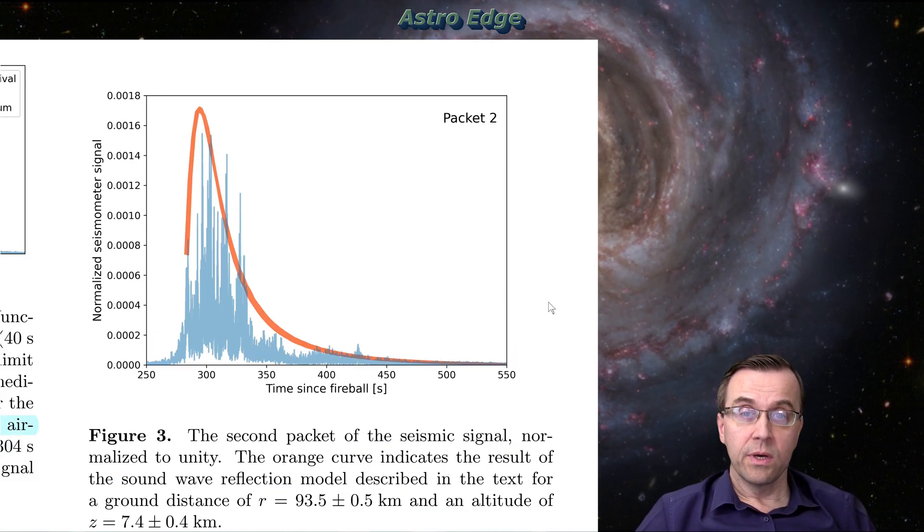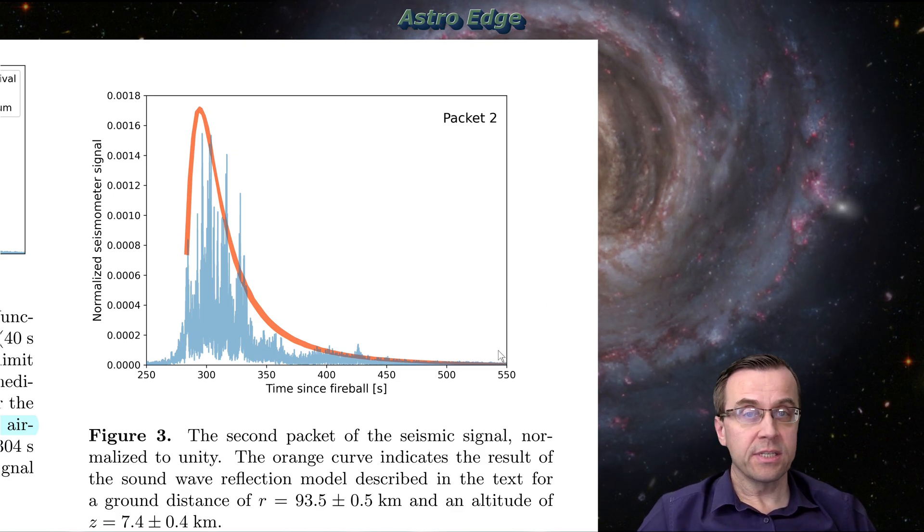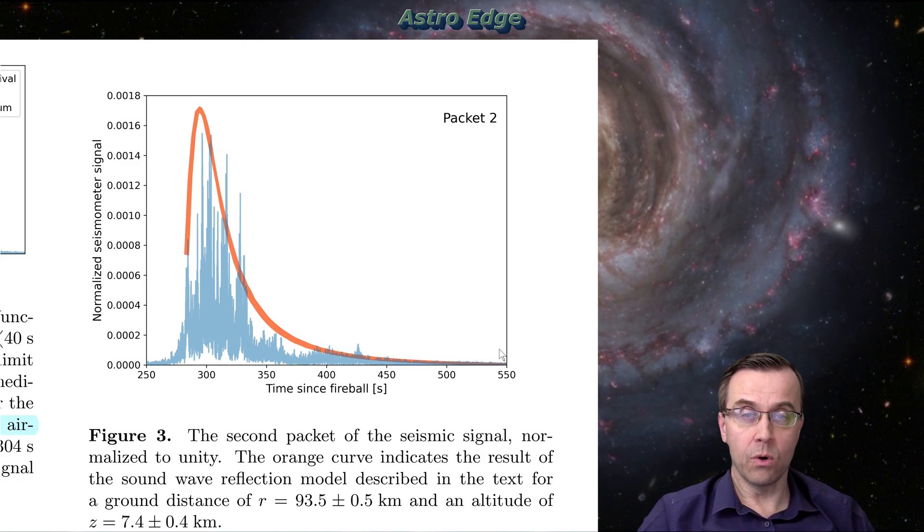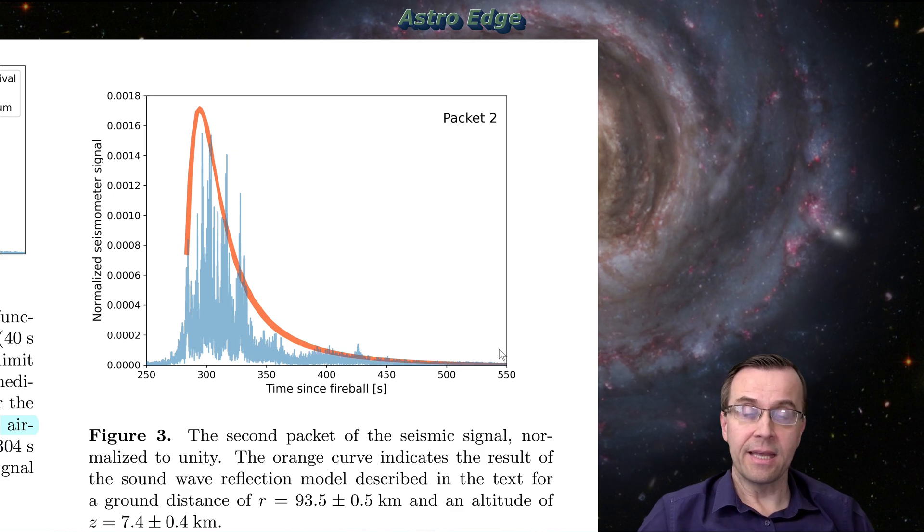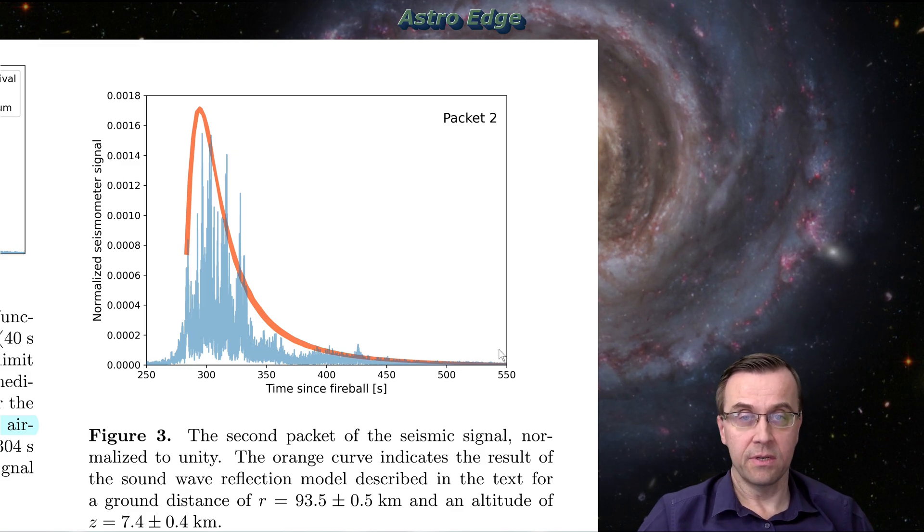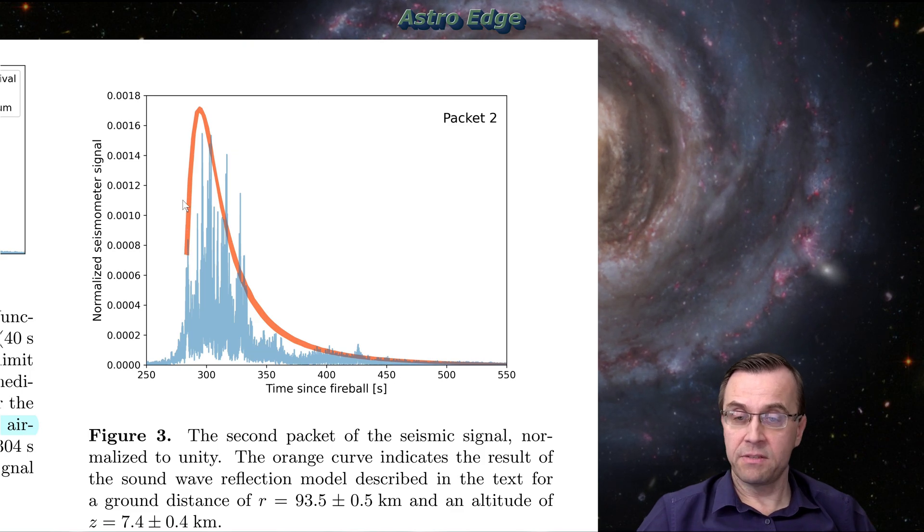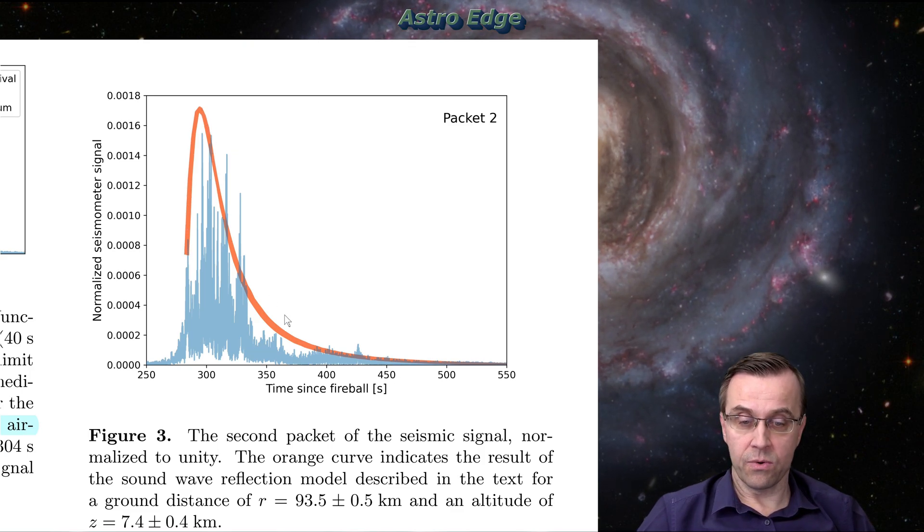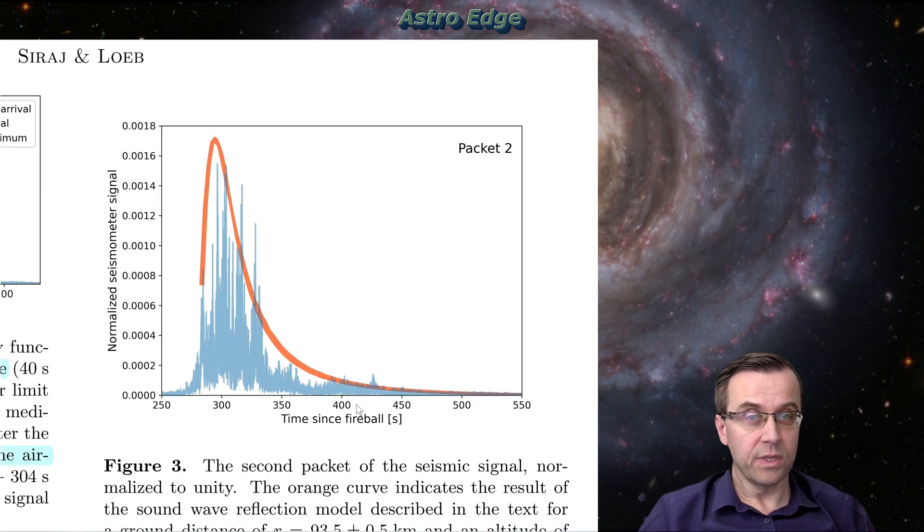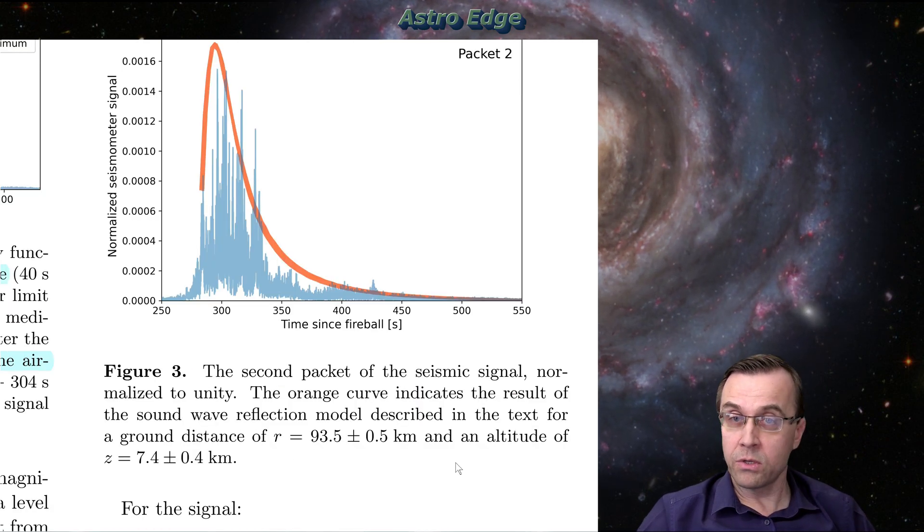So what did researchers do? They made a fairly sophisticated model, which describes how a sensor can hear a sound from an explosion over the ocean surface, including all those possible paths for the sound to come to the sensor directly or through a reflection from the water surface. The best fitting model is shown here in orange. As you can see, it follows the actual data pretty nicely. So this is a fairly convincing model of what happened. By fine tuning the model to the data, they managed to recover two important model parameters.